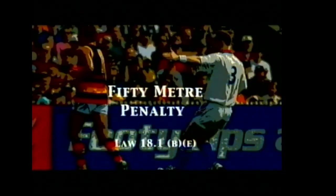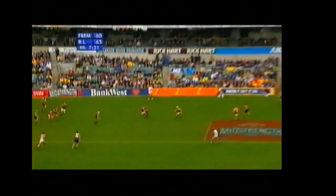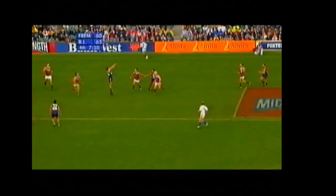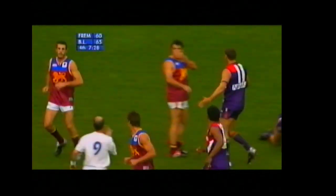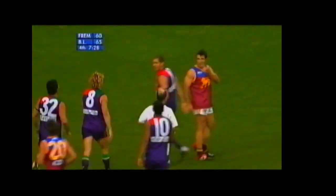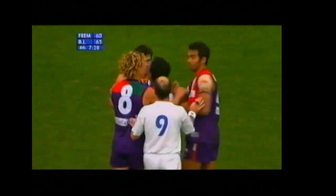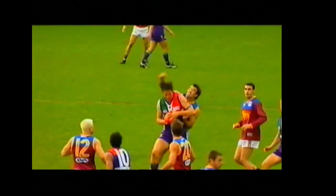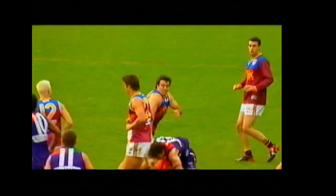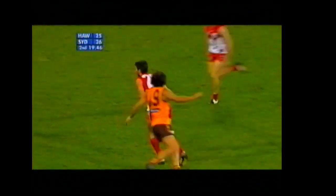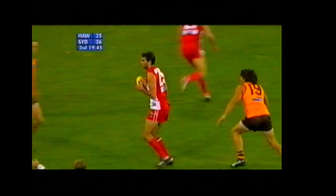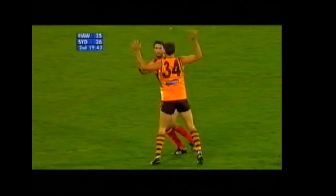We turn our attention to the rules relating to 50 metre penalties, specifically late contact in marking contests. First, we see Chris Scott make late contact with his opponent. Next, Mark Graham encroaches into the five metre protected area when he was not involved in the marking contest — Graham gives away 50.